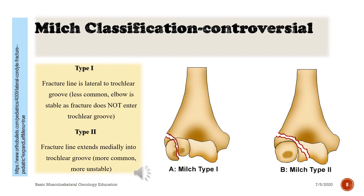Milch Classification — Type 1: fracture line is lateral to the trochlear groove; less common; elbow is stable as fracture does not enter the trochlear groove. Type 2: fracture line extends medially into the trochlear groove; more common and more unstable.